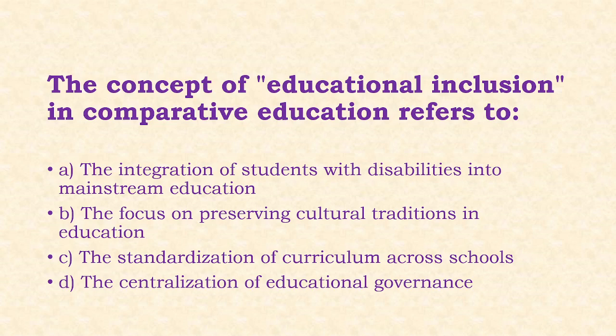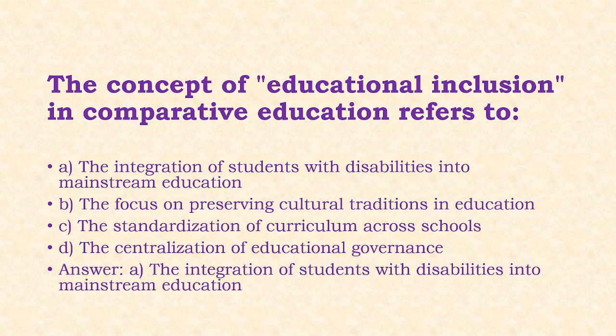Next: The concept of educational inclusion in comparative education refers to the integration of students with disabilities into mainstream education. Options: integration of students with disabilities into mainstream education; focus on preserving cultural tradition in education; standardization of curriculum across schools; centralization of educational governance. The answer is option A.